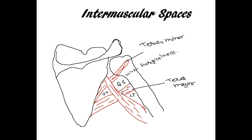Now let's see the boundaries of the spaces. We already discussed the long head of the triceps. For the quadrangular space: the lateral side has the surgical neck of the humerus, the upper side is the lower border of the teres minor, the lower side is the upper border of the teres major, and the medial side is the lateral border of the long head of the triceps.